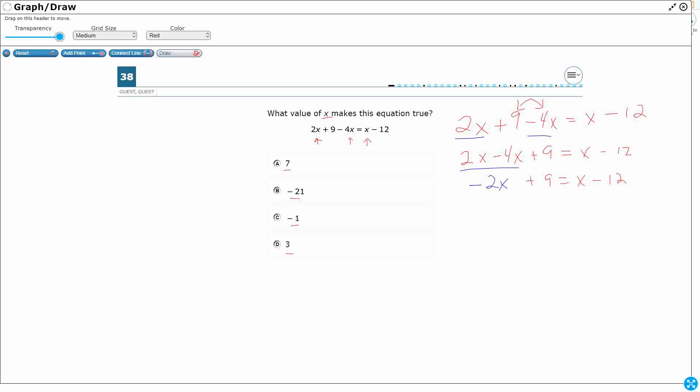Now what I'm going to end up wanting is a positive x. So I could subtract x from both sides to get rid of that positive x, but I'm going to want a positive x at the end. So let me just go ahead and add 2x to both sides. What that's going to do is cancel that out over here, and that's going to end up getting me a 9 equals, I've got an x plus 2x, that's 3x, and then a minus 12.